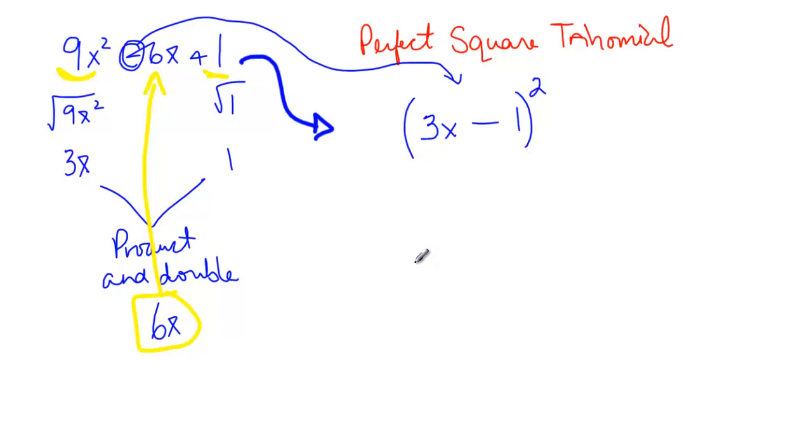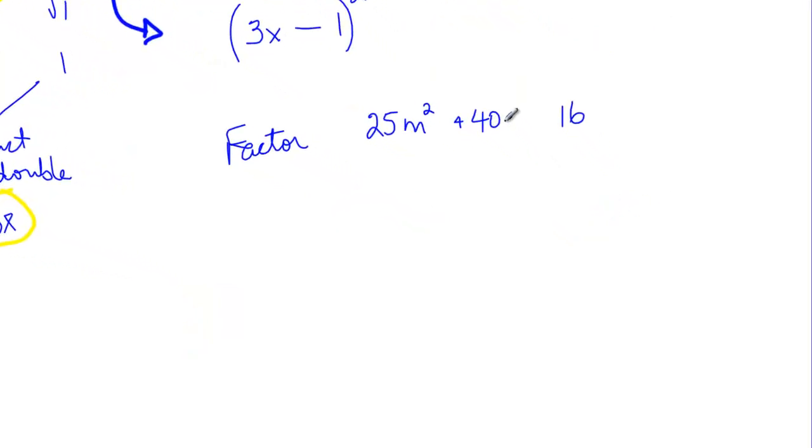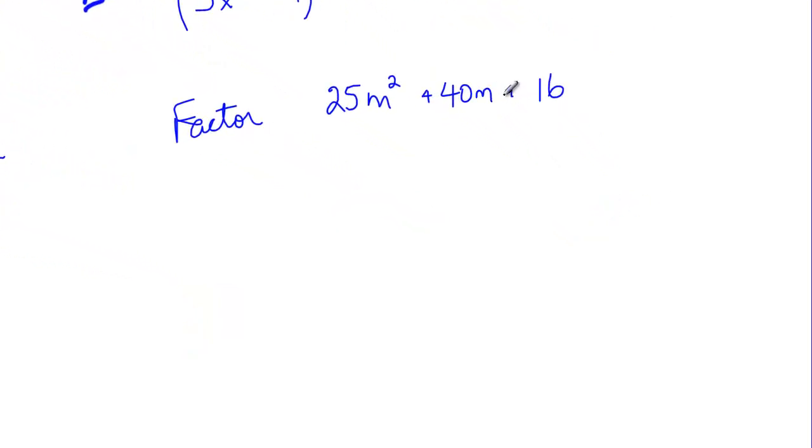So let's say I gave you one like, let's factor 25m squared, 40m, plus 16. When you look at this trinomial, things that should jump out at you, 25 and 16 are perfect squares. The square root of 25m squared is 5m. The square root of 16 is 4. 5 times 4 is 20, doubled is 40. This is a perfect square trinomial.